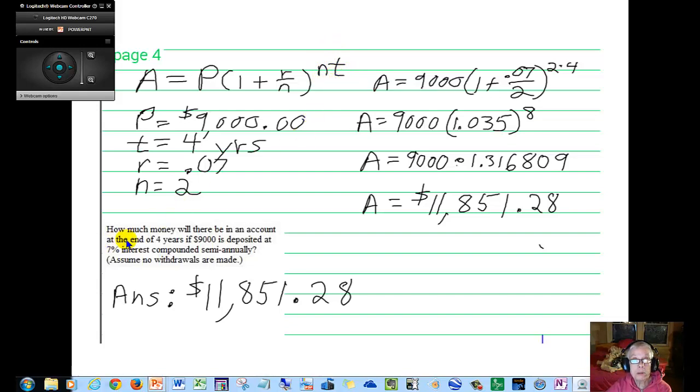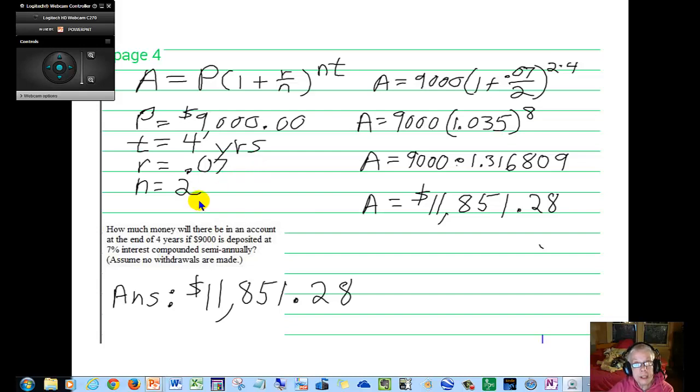So here's our first problem, which is problem number 25 in your homework. How much money will there be in an account at the end of four years if $9,000 is deposited at 7% interest compounded semi-annually? Well for this problem then, P is the $9,000 that was deposited, T is four years, R is 0.07, which is 7% written as a decimal, and N is 2 because semi-annually, the number of compounding periods is 2, semi-annually means 2.